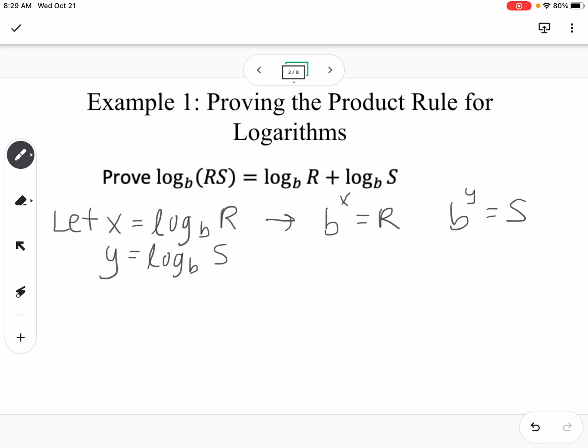So then we can say that R times S would be equal to B to the x times B to the y. And we know with our properties of exponents that that means that RS is equal to B raised to the x plus y.